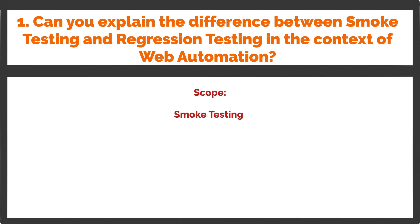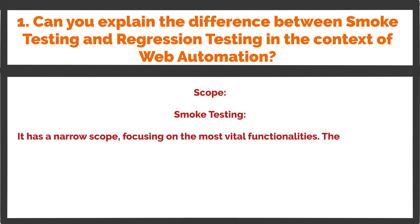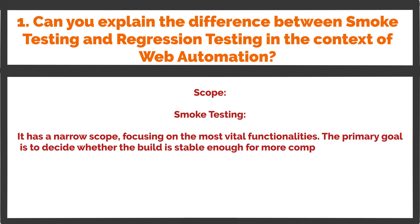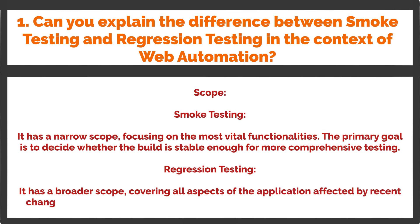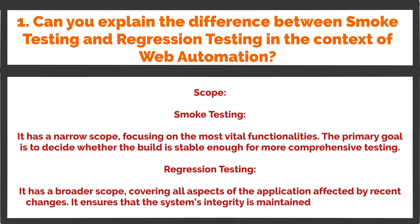Smoke testing has a narrow scope, focusing on the most vital functionalities. The primary goal is to decide whether the build is stable enough for more comprehensive testing. Regression testing has a broader scope, covering all aspects of the application affected by recent changes. It ensures that the system's integrity is maintained across iterations.